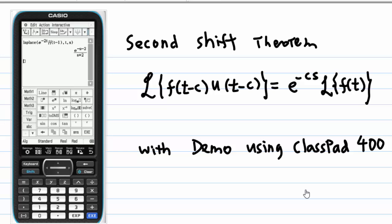This is a demonstration of second shift theorem for Laplace transform. Laplace transform of f times e to the ct is equal to F bar minus c times Laplace transform of f, with a demo using ClassPad 400.